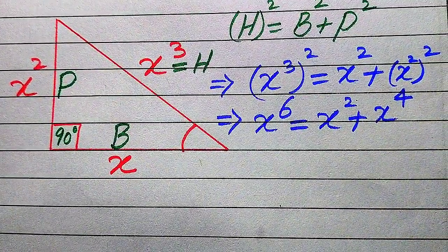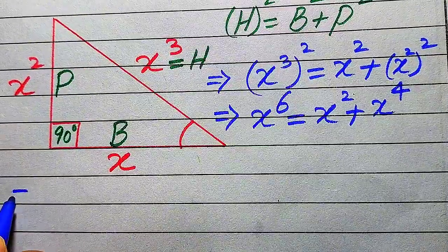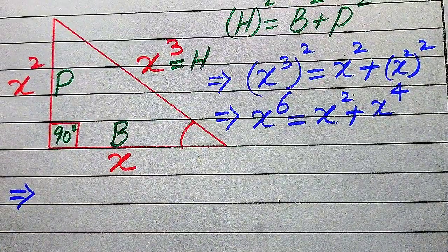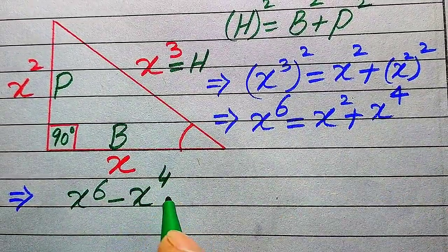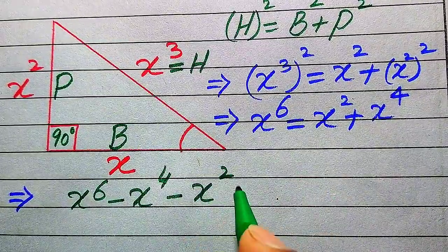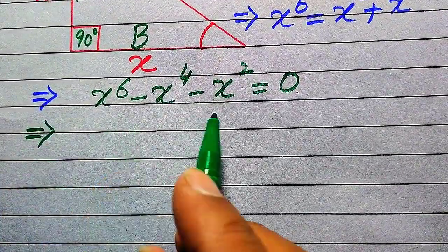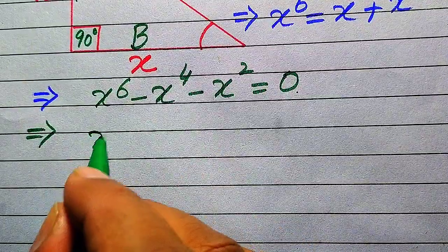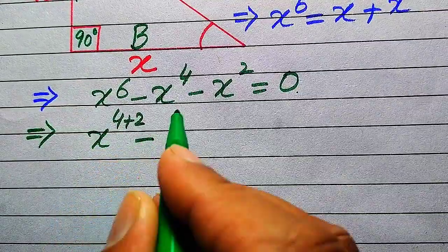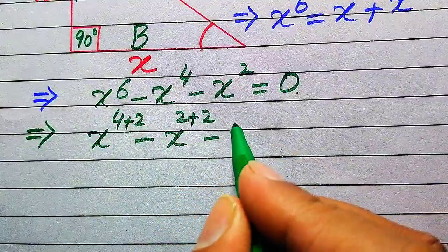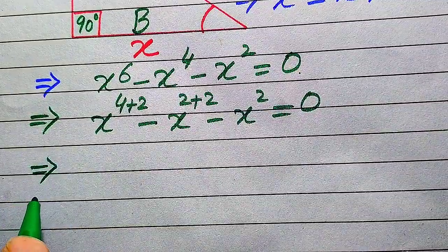Moving all values to the left-hand side, we get x⁶ - x⁴ - x² = 0. We can rewrite the exponents as x^(4+2) - x^(2+2) - x², which helps us apply the exponential law to break and factor these terms.